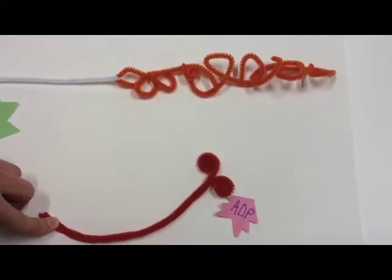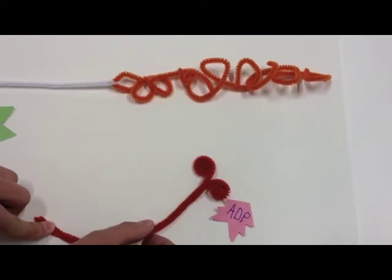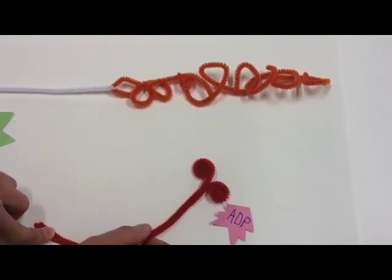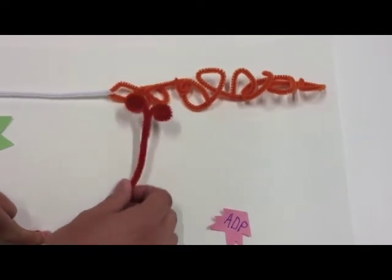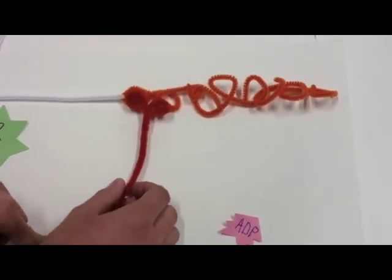The myosin head, in its low energy state, is releasing ADP. When the actin has the active site exposed, the myosin head jumps over to the actin, forming a crossbridge.